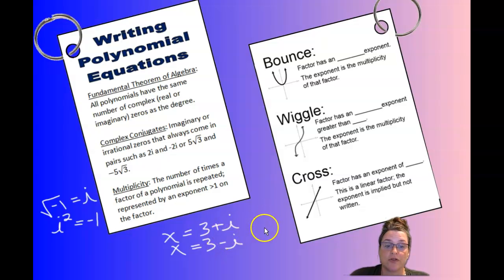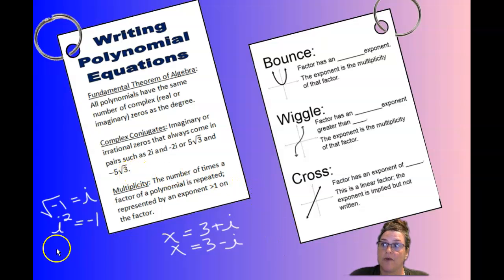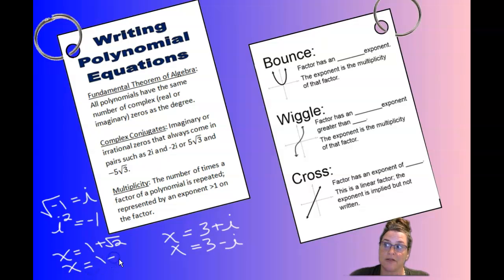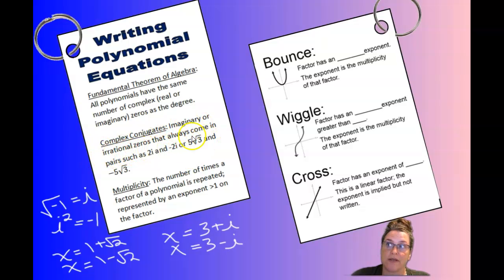Irrational zeros include square roots that are not perfect squares. For example, 5 times the square root of 3 — if that is a zero of your polynomial, then negative 5 times the square root of 3 has to be with it. Or if you had a zero of x equals 1 plus the square root of 2, because that is an irrational number — a non-repeating, non-terminating decimal — its conjugate, 1 minus the square root of 2, would also have to be a zero of that polynomial, because imaginary and irrational zeros always come in conjugate pairs.